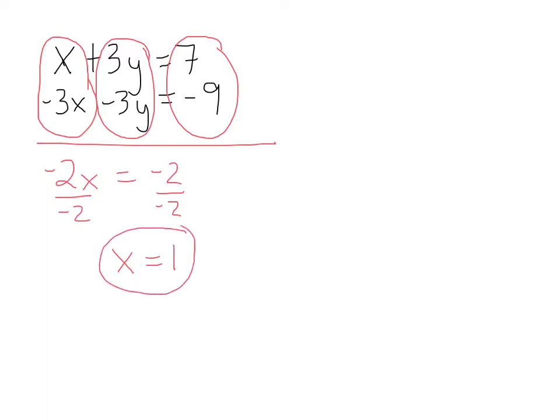And now that I know what x equals, I can take that x and I can plug it into the top equation for x. Or I can plug it in the bottom equation for x and solve for y. Which one of the two equations would you like to plug it into? The top one looks like it would be the easiest to plug in. So I'm going to take this 1 and I'm going to plug it in for x in the top equation. So I'll have 1 plus 3y equals 7.